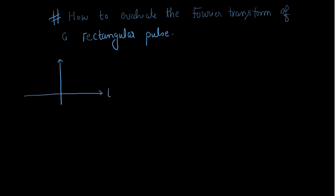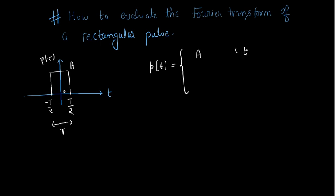In the time domain, if we are given a rectangular pulse whose width is T and amplitude is A, centered around the origin, we can write this pulse P(t) as: P(t) = A when time is from minus T/2 to T/2, and zero otherwise.